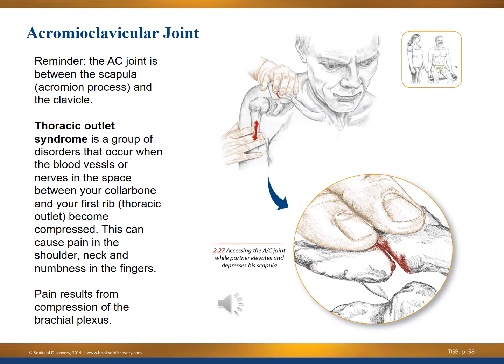The acromioclavicular joint — the AC joint — is between the scapula and the clavicle, and it's also where thoracic outlet syndrome occurs. Thoracic outlet syndrome is a group of disorders that occur when the blood vessels or nerves in the space between the collarbone and the first rib — the thoracic outlet — become compressed. This can cause pain in the neck and shoulder and numbness in the fingers. The pain results from compression on the brachial plexus.